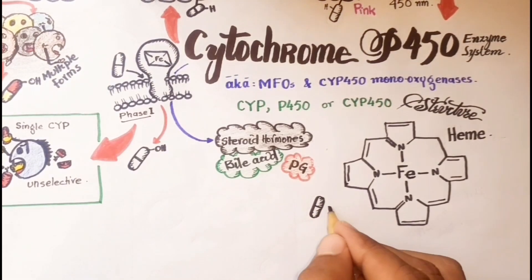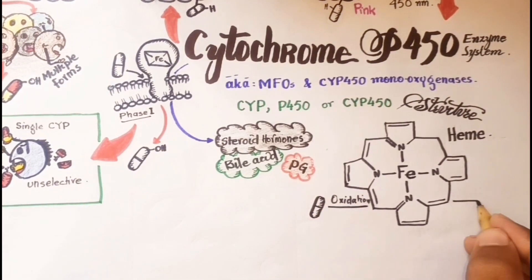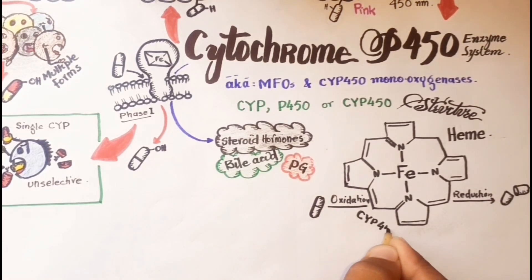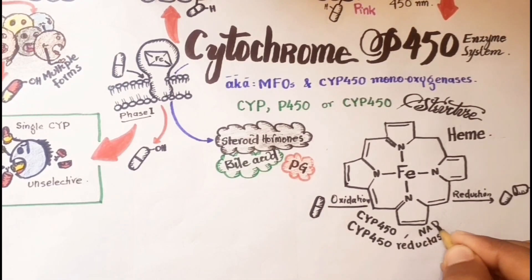These enzymes catalyze oxidation reduction processes that require cytochrome CYP450, CYP450 reductase, NADPH as a reducing agent, and oxygen.